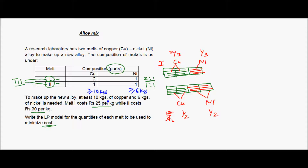Melt one costs rupees 25 per kg while melt two costs rupees 30 per kg. We are asked to write an LP model for the quantities of melt one and melt two to minimize the cost. We have to find the quantities of melt one and melt two for creation of melt three so that the overall cost is least, while satisfying the constraints that copper ≥ 10 kgs and nickel ≥ 6 kgs.